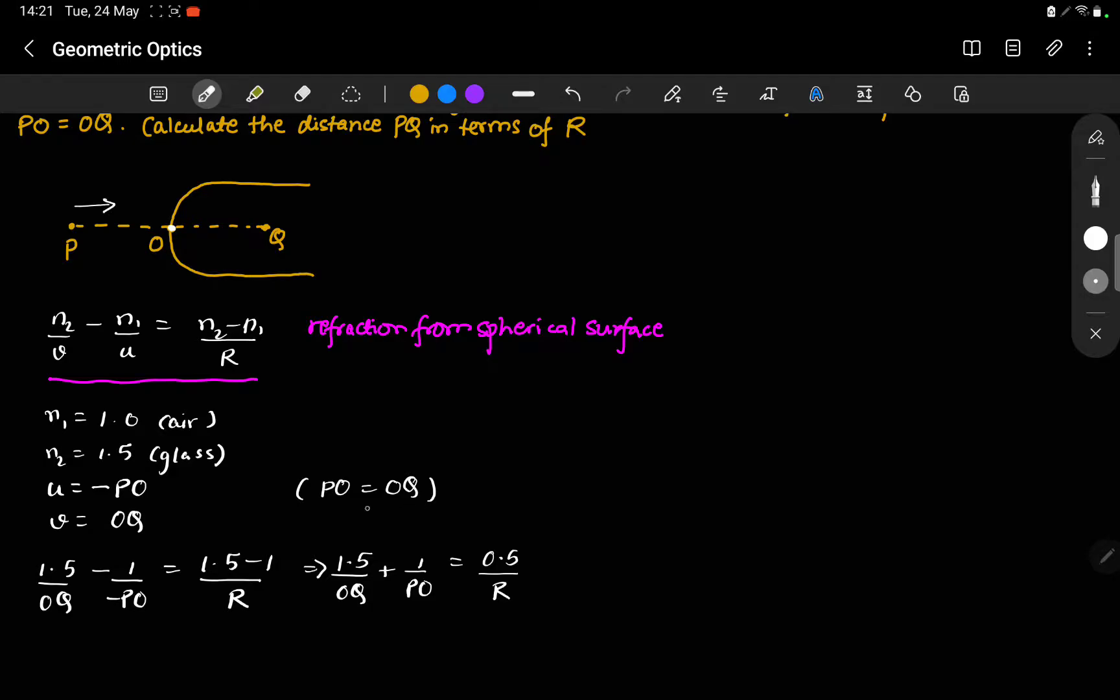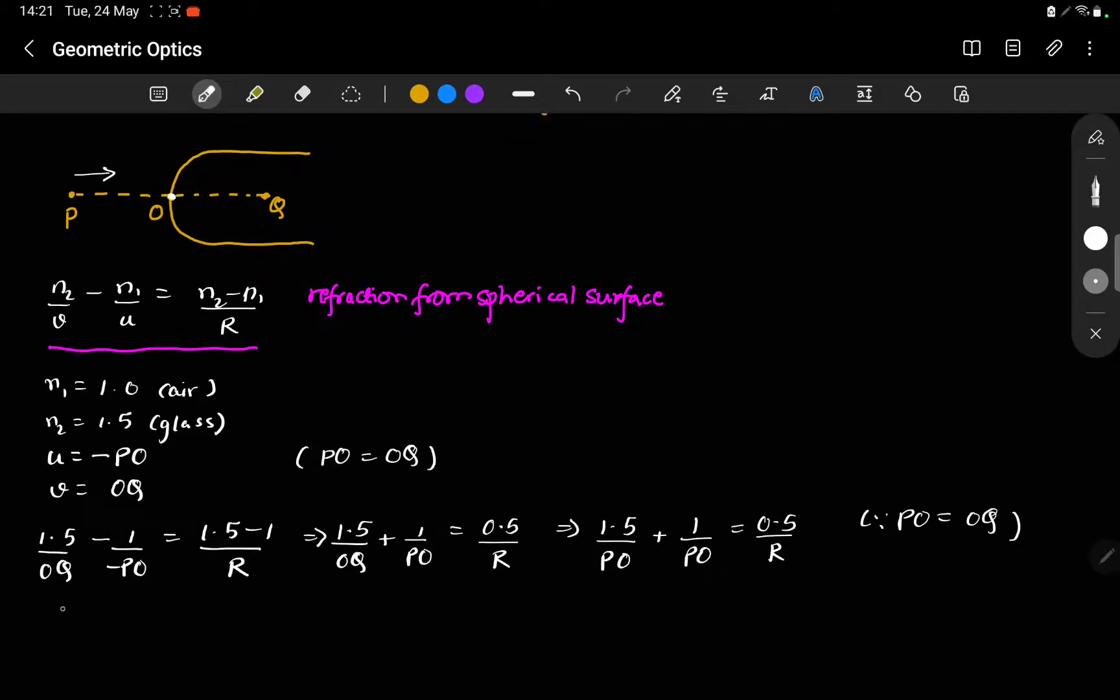Now we can use this given fact that PO is equal to OQ. So we can write. This is since we are given that PO is equal to OQ. Thus we get PO in terms of R as follows.